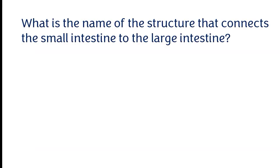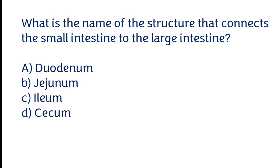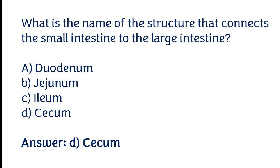What is the name of the structure that connects the small intestine to the large intestine? Options: a) Duodenum, b) Cecum, c) Ileum, d) Jejunum. The correct answer is option B. The cecum is the structure that connects the small intestine to the large intestine.